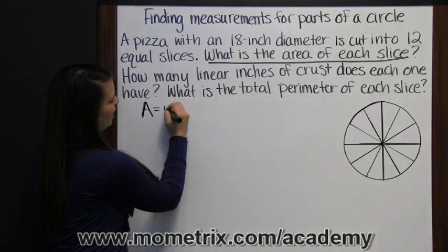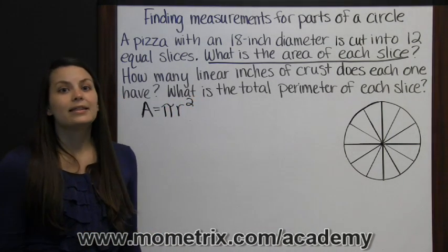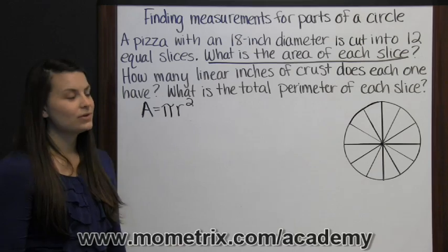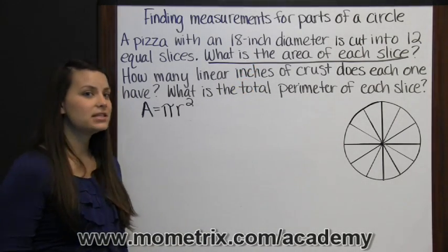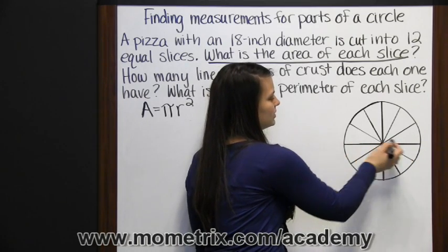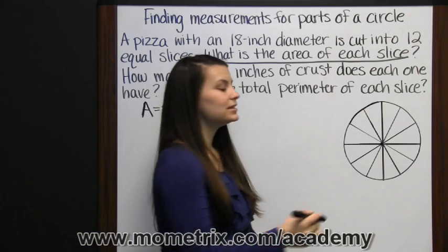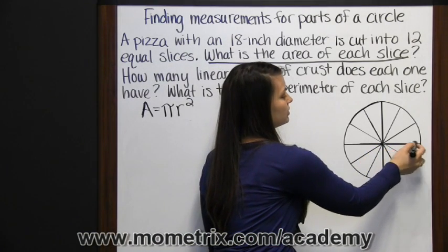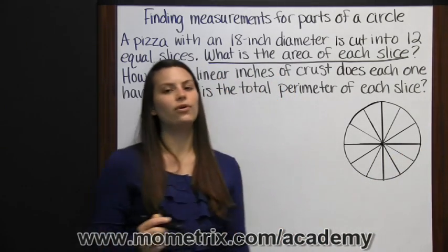Area of a circle is pi times the radius squared. They didn't give us the radius though. We were given the diameter. The diameter is the distance across the circle through the center. It has its end points on the circle. The radius is the distance halfway across the circle, or it has its end points on the center and the outside of the circle.